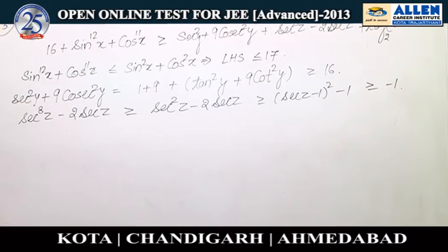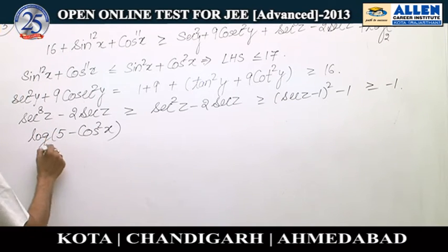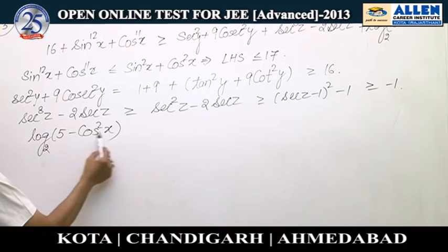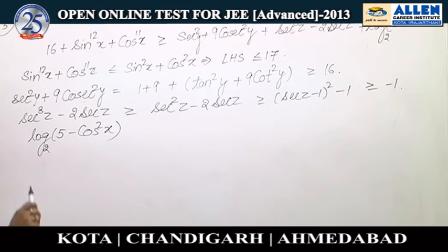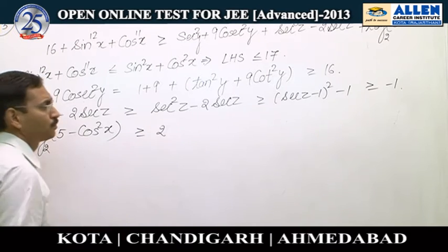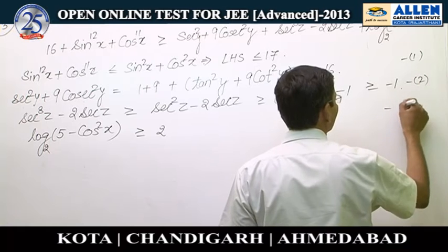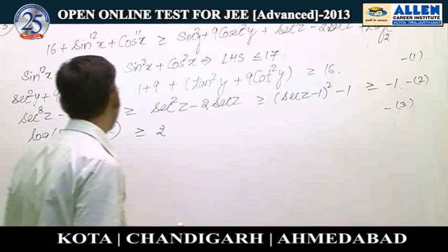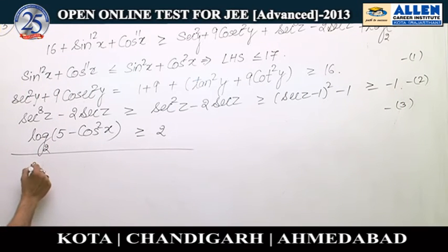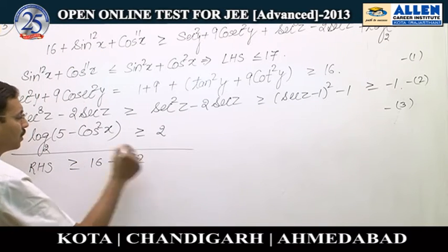There is a third part of the right hand side: log of (5 minus cos squared x) to the base 2. The least value of this expression is obtained when cos squared x is maximum, which is 1. It becomes log 4 to base 2, which is 2. So it is greater than or equal to 2. Adding these three parts of the right hand side, the right hand side is greater than or equal to 16 minus 1 plus 2, which is 17.